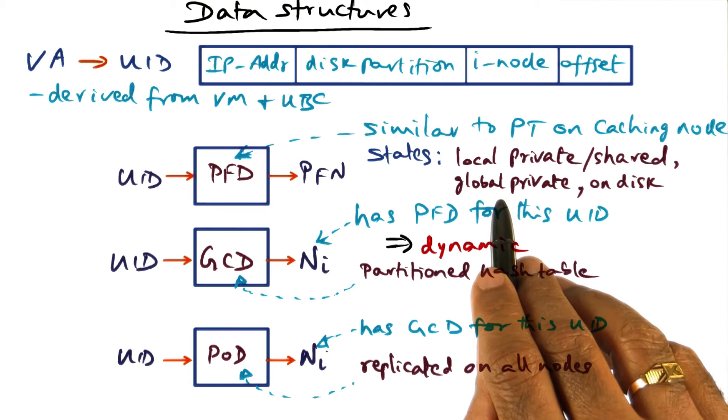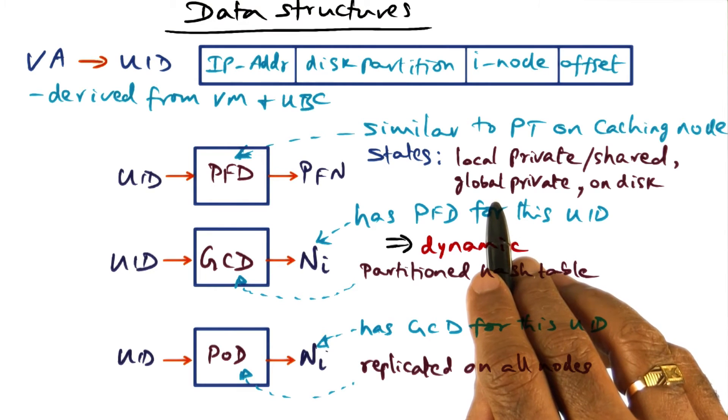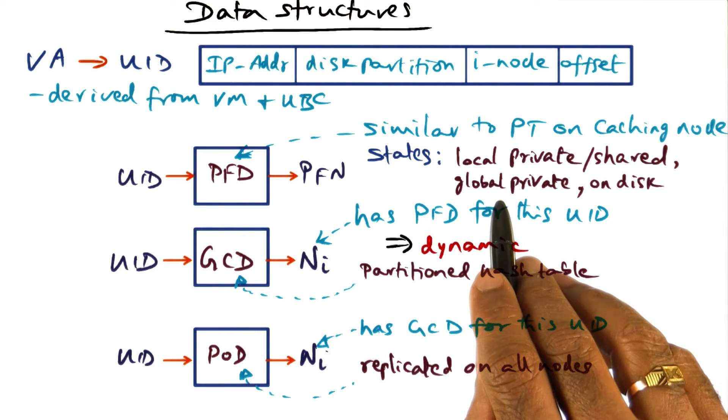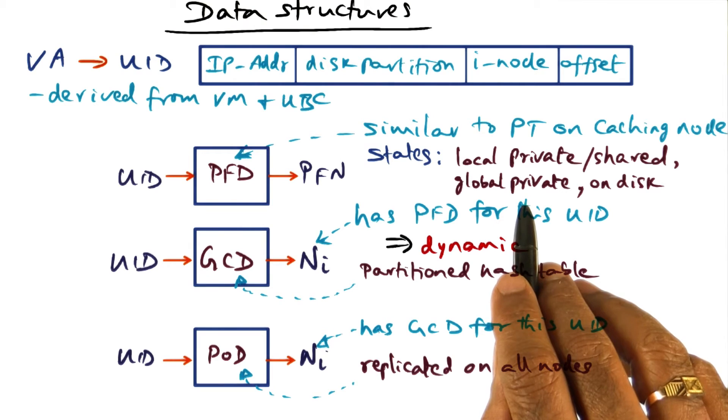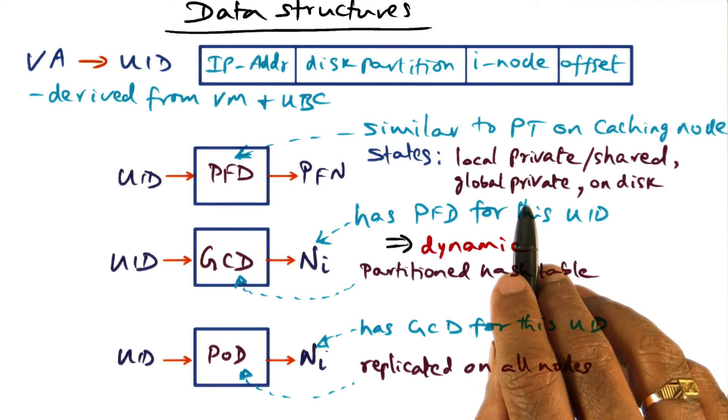If it is in the global part, we know by definition, global part is only hosting clean pages. So the content of global cache is always going to be private pages. And so the state of the page that happens to be in the global cache of a particular node is guaranteed to be a private state.